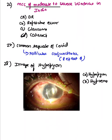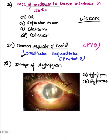The most common cause of moderate to severe blindness in India is cataract, and Vision 2020 covers cataract, refractive errors, and other conditions. The most common sequela of COVID is follicular conjunctivitis — a PYQ repeated from last year. An image of hypopyon was shown with options including hypopyon and hyphaema.